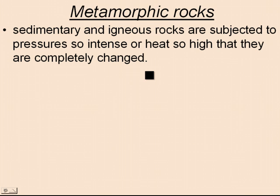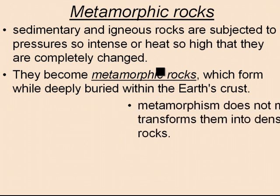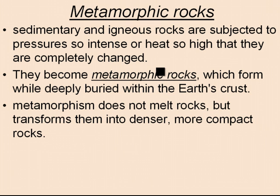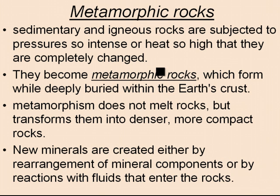The third type of rock is metamorphic rock. Metamorphic rocks happen when sedimentary or igneous rocks are subjected to pressures so intense or heat so high that they are completely changed — metamorphosized. The word metamorphic means to change, and that's what happens to these rocks. It does not melt the rocks, but it transforms them by pushing them together tightly, changing the chemical makeup and composition of the rock. New minerals are created either by rearrangement of the mineral components or by reaction with fluids that enter the rocks.